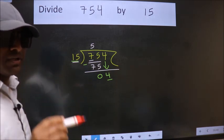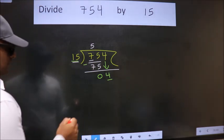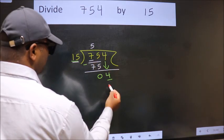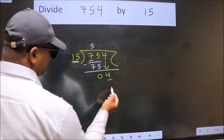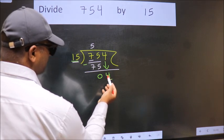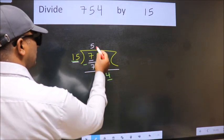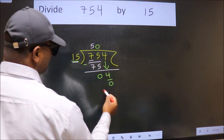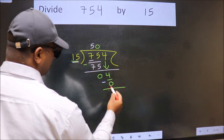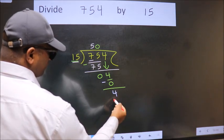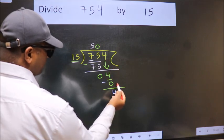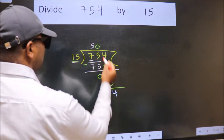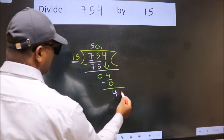Instead of that what we should think of doing is which number should we take here. If I take 1 we will get 15. But 15 is larger than 4. So what we do is we take 0 here. So 15 into 0, 0. Now we subtract. We get 4. Over here we did not bring any number down. And 4 smaller than 15. So now we can put dot and take 0.